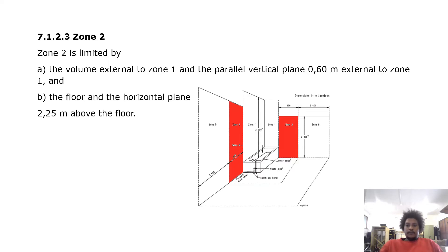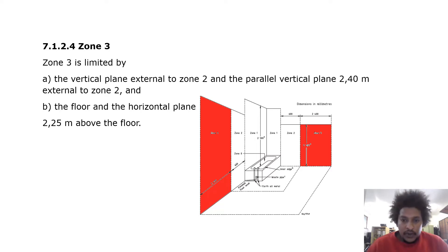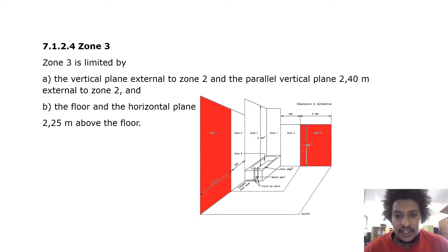Zone 3 is limited by the vertical plane external to zone 2 and the parallel vertical plane 2.4 meters external to zone 2, and the floor and horizontal plane 2.25 meters above the floor. As shown in red in the picture, zone 3 is the same height as zone 2, right next to zone 2 and 2.4 meters on the vertical plane.